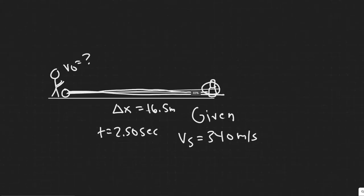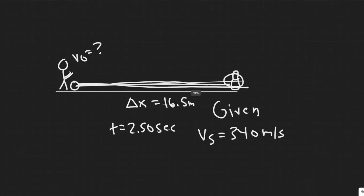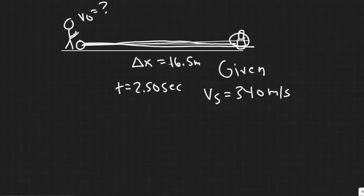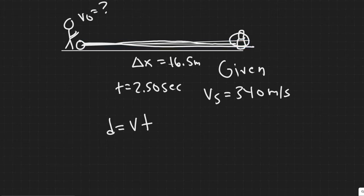So the first thing we have to solve for is how long it took for the sound to travel here. Okay, so how do we do that? So you should know that distance is equal to velocity times time. So distance equals velocity times time. So we want to figure out the time this took. We just need the distance and the speed it traveled at. So time equals distance divided by velocity.